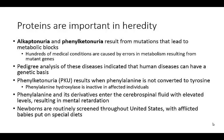Pedigree analysis indicated that these conditions have a genetic basis. In phenylketonuria, or PKU, the amino acid phenylalanine is not converted to tyrosine. There's an enzyme for this process called phenylalanine hydroxylase, and it is inactive in affected individuals. As a result, phenylalanine and its derivatives build up, enter the cerebrospinal fluid at elevated levels, and result in mental retardation.